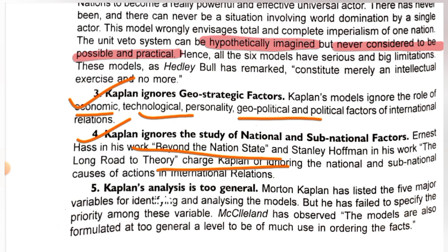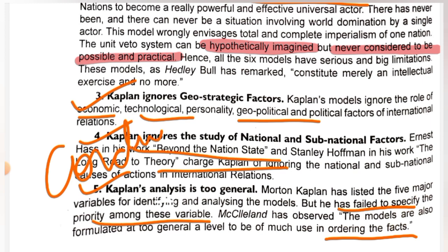Fifth criticism — Kaplan's analysis is too general. He presented and analyzed his models but failed to specify the priority among these variables. He failed to identify which variable should come first in priority among the models. The models are also formulated at too general a level to be of use in ordering the facts. Make sure to write a conclusion at the end — it will earn you good marks. I hope this video was helpful; please like, subscribe, and share. Thanks for watching.